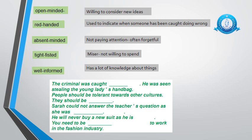You have a white box in front of you with some blanks. The criminal was caught — blank — he was seen stealing the young lady's handbag. Now you have a clue there as well — I have added clues in the sentences. People should be tolerant towards other cultures — if you're tolerant, you are more accepting. Choose a compound adjective. Carry on with the rest of the sentences and we'll go through these in Zoom class together.